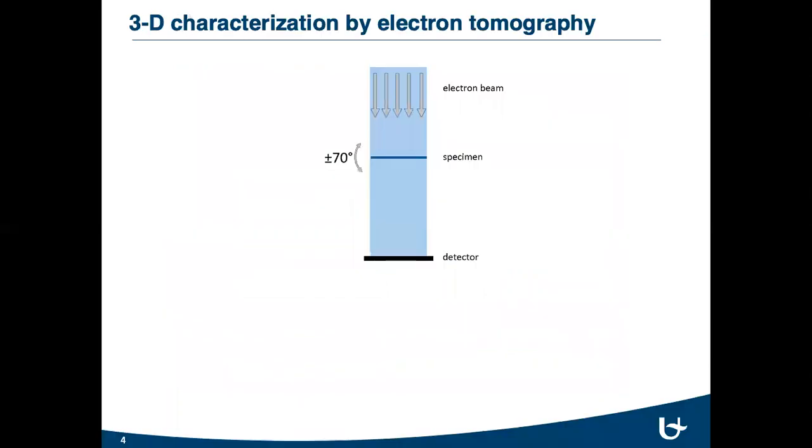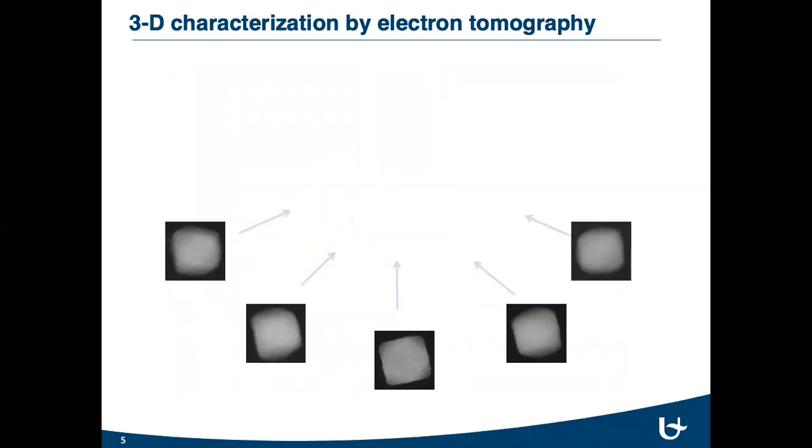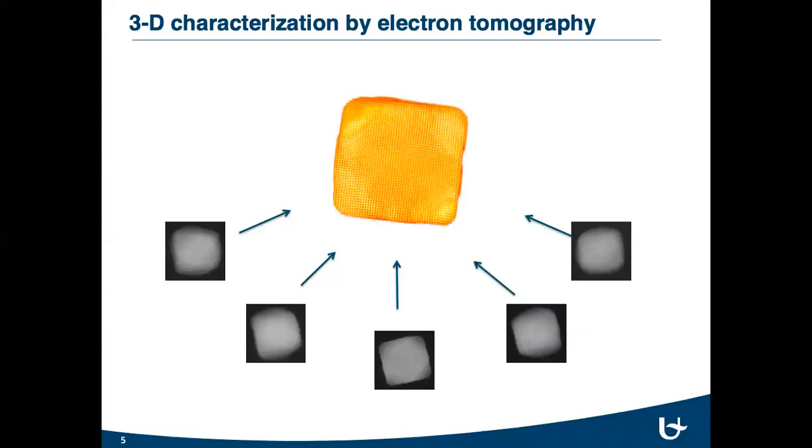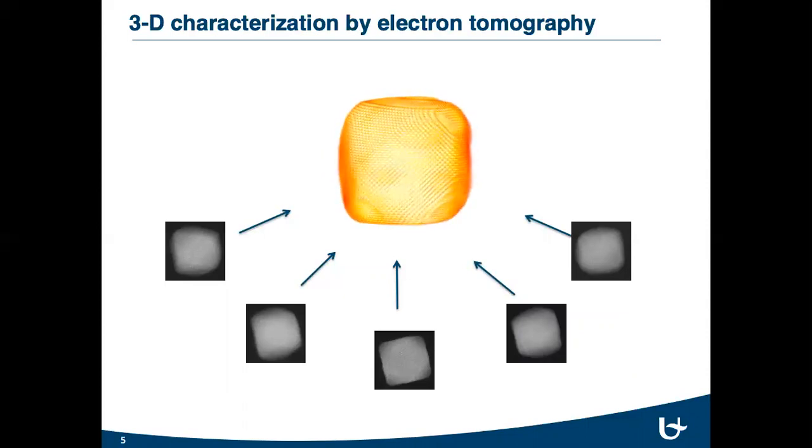Three-dimensional characterization of nanomaterials has great importance since there is a direct relationship between the properties and the structure. One of the most powerful and common three-dimensional structural characterization methods is electron tomography. For the tomography, a tilt series of STM images are acquired at different angles. Then this tilt series is used as an input for the reconstruction algorithm, and three-dimensional reconstruction of a nanostructure is obtained.